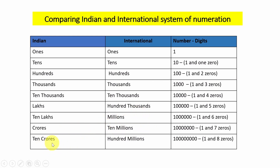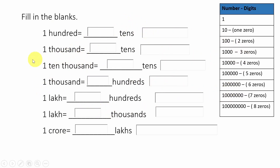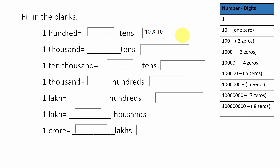Ten crores equal to hundred millions. Now let us do this exercise. First question: one hundred equals how many tens? To do this, one hundred should be written as a product of tens. What number should be multiplied by ten to get hundred? We know that it is ten, because ten tens are hundred. So the answer is ten tens.